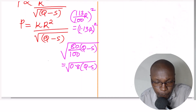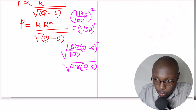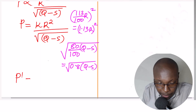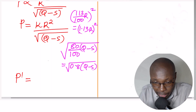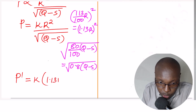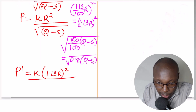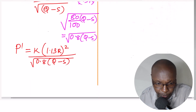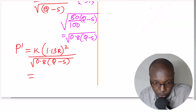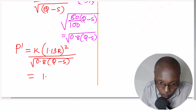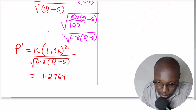After getting the increased R and decreased Q and S, we now find the new P, written as P prime. We incorporate the new values: R squared becomes 1.13R squared in the numerator, and the denominator has 0.8 times Q minus S under the square root. Computing 1.13 squared gives 1.2769, and squaring R gives R squared.